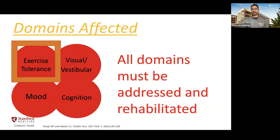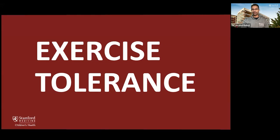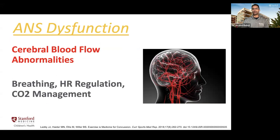Regarding exercise tolerance, concussion affects things primarily controlled by the autonomic nervous system centrally — ventilation, cerebral blood flow, and the partial pressure of carbon dioxide. All of these are altered during exercise, and those alterations cause symptoms associated with concussion, particularly when patients attempt to exercise. The autonomic nervous system is responsible for breathing, heart rate regulation, and carbon dioxide management — all critical to normal brain function.